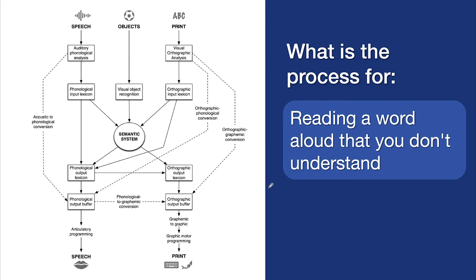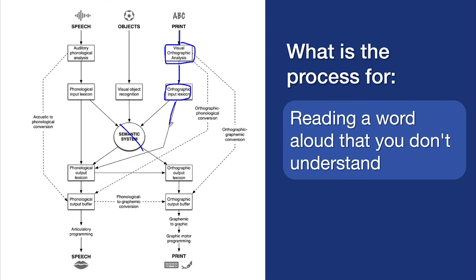What about reading aloud a word that you know but don't understand? You can start by looking at where it won't go — it won't go to the semantic system because you don't know what it means. But if you recognize it, it's in your input lexicon. So it goes: orthographic analysis, input lexicon, bypasses the semantic system. Presumably you've said it before, so then you assemble it and say it.